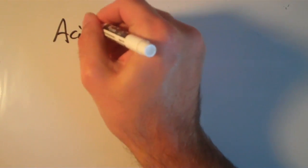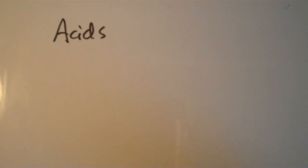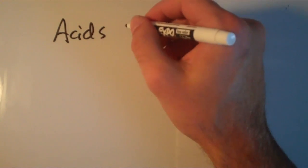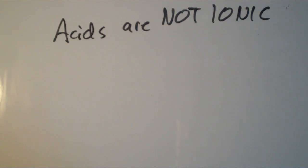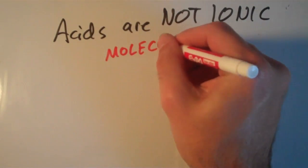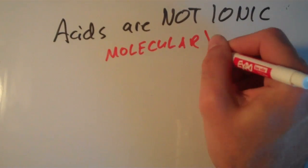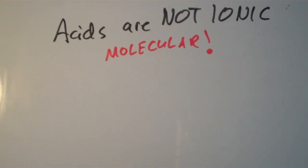One last tip before we end the video: these acids, both the binary acids and the oxyacids, all these acids are not ionic. The way that we name them sort of gives us the notion that they are ionic. But acids are not ionic. They are actually molecular. If I were to look at these acids under a supersensitive microscope, I wouldn't see this infinite array of cations and anions that characterizes an ionic compound. Instead, I would see these discrete individual molecules.